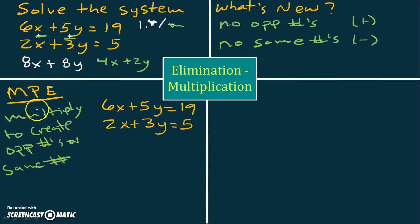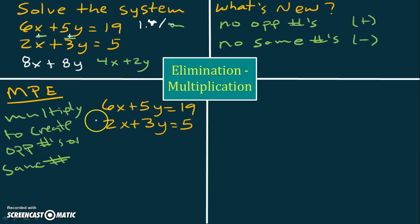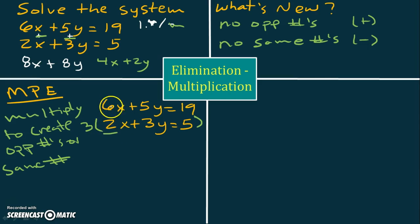If you remember what the multiplication property of equality is: you can multiply an equation by the same number as long as you do it to both sides. So if you look at the systems, what can we multiply one of these equations by to either create an opposite number in front of one of the variables or a same number? Well, if we multiply the bottom equation by 3, then 3 times 2 gives us 6, which is the same number in front of x in the top equation.